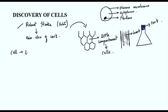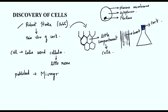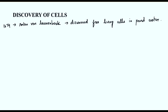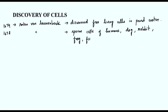The word 'cell' comes from the Latin word 'cellula', which means a little room. In the year 1665, Robert Hooke published his work in a book called Micrographia. He was the one who discovered cells. Then in the year 1674, scientist Anton van Leeuwenhoek improved the microscope and discovered free-living cells in pond water for the first time. In 1678, the same scientist discovered sperm cells of humans, dogs, rabbits, frogs, fish, and insects.